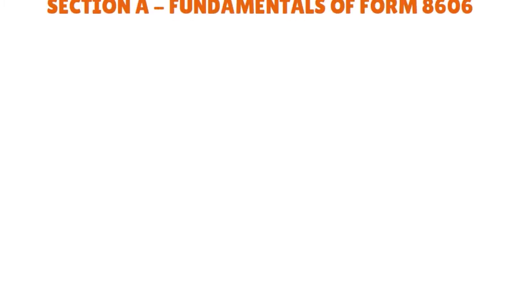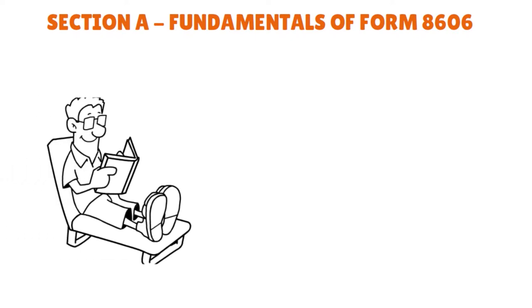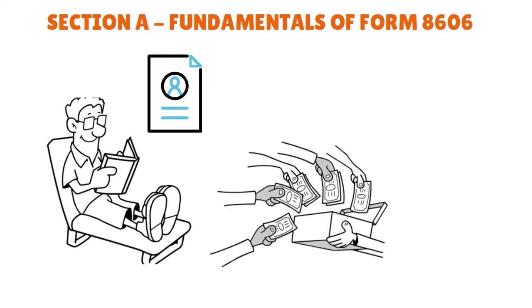The first section: fundamentals of Form 8606. The form is used in conjunction with individual retirement account activity. An individual is responsible for filing Form 8606 each year if a non-deductible regular contribution is made to a traditional IRA, if a distribution from a traditional SEP or SIMPLE IRA is taken, if a traditional SEP or SIMPLE IRA to Roth IRA conversion is completed, or if a non-qualified distribution is taken from a Roth IRA.